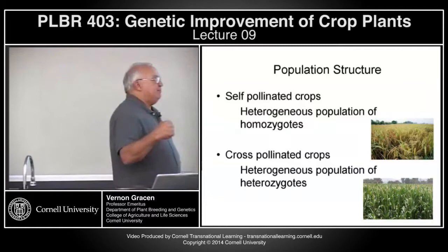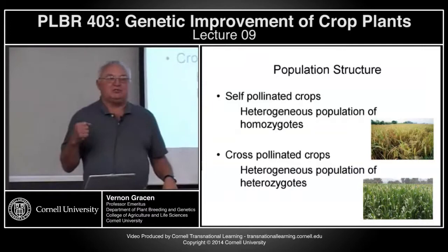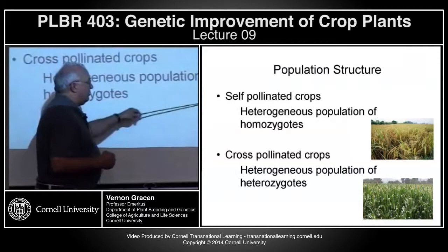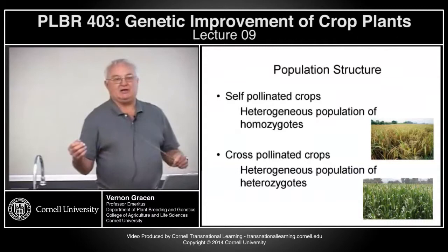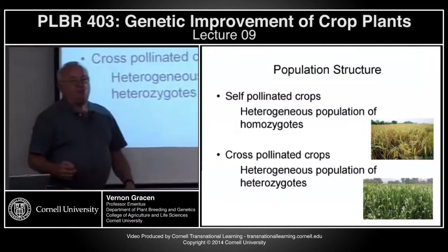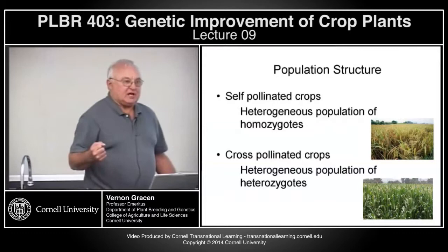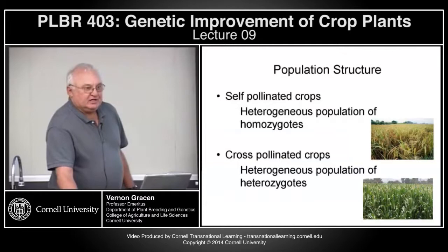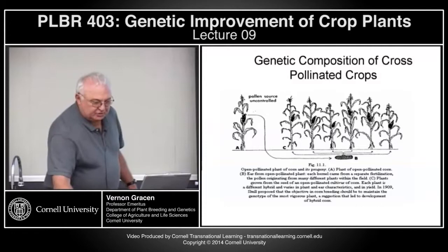In point of fact, we develop very uniform pure line varieties with self-pollinated crops. In cross-pollinated crops, we either develop open-pollinated varieties, which aren't very homogeneous, or we develop pure line F1 hybrids, which are very uniform even though they're completely heterozygous. So keep those concepts of heterogeneity, homogeneity, heterozygosity, and homozygosity in mind.